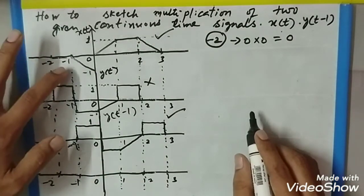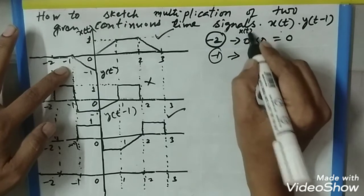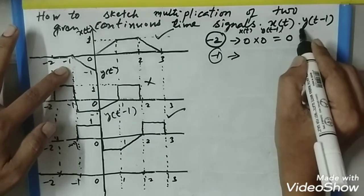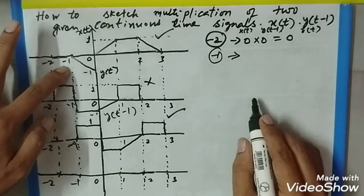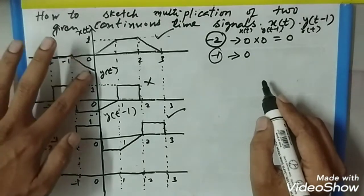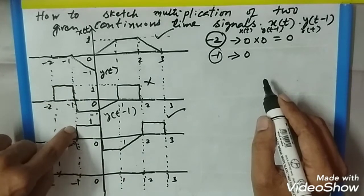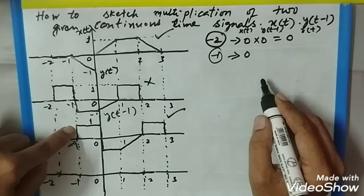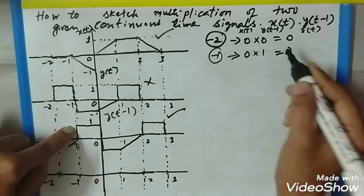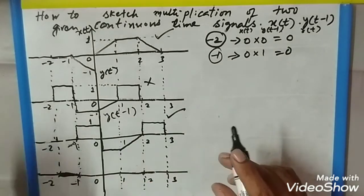Coming to the next, that is the minus 1 position. At minus 1, we have x(t) and y(t-1). This is the result r(t). At the minus 1 position, x(t) is gradually changing from 0 to minus 1, but at this time y(t-1) has the value 1 here. So 0 into 1 makes it 0 again — the result signal is like this. We get 0 from minus 2 to minus 1.